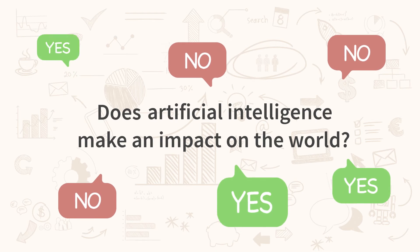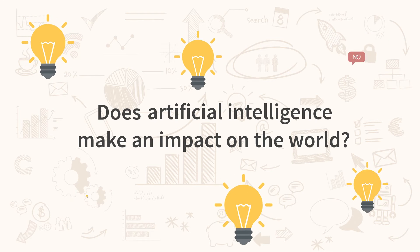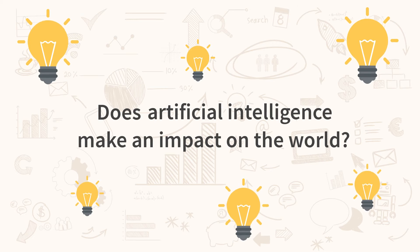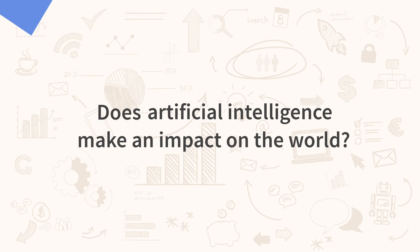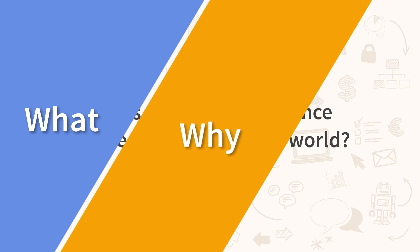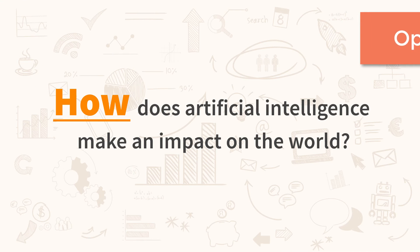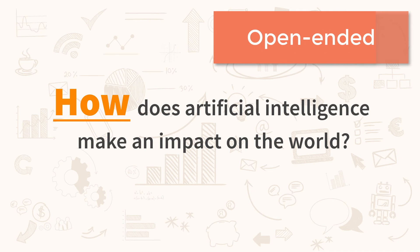The simplest way to transform a yes-or-no question to open-ended is to ask the question with 'What?', 'Why?', or 'How?'. And your question now becomes: How does artificial intelligence make an impact on the world?